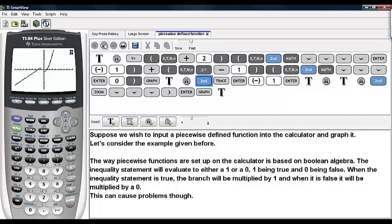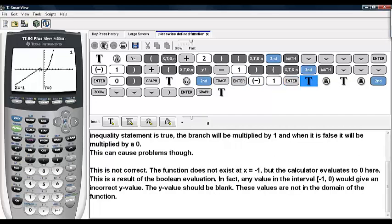For example, if we wanted to evaluate this piecewise function at the value negative 1, it gives a value of 0. But this is not correct. The function does not exist at x equal negative 1, but the calculator evaluates to 0 here.